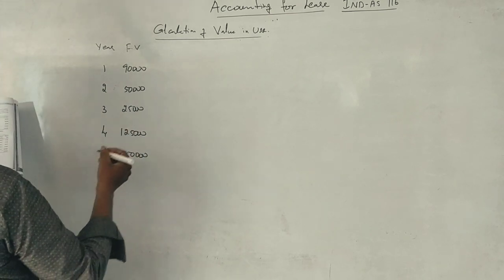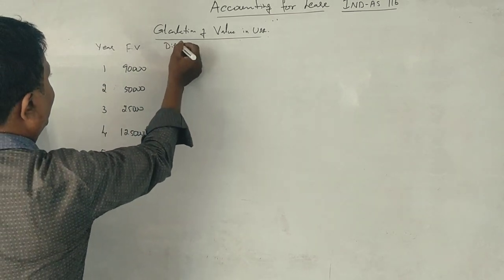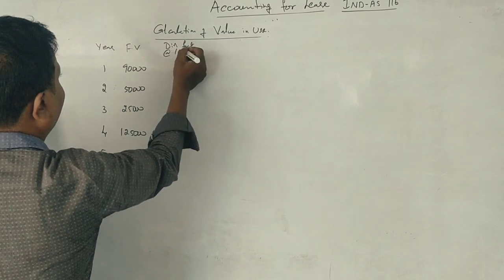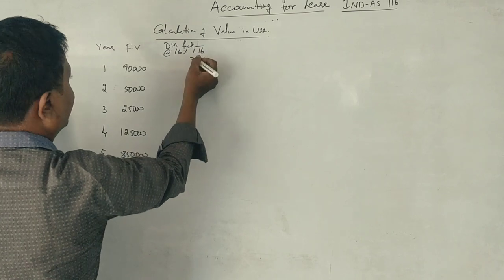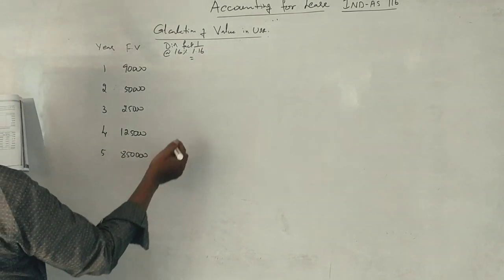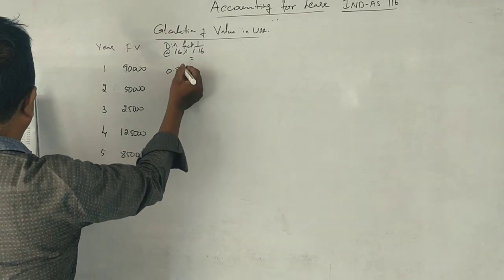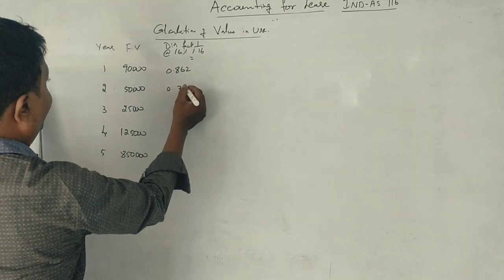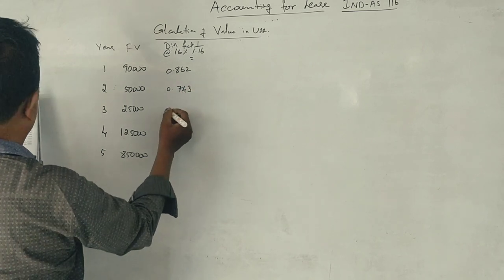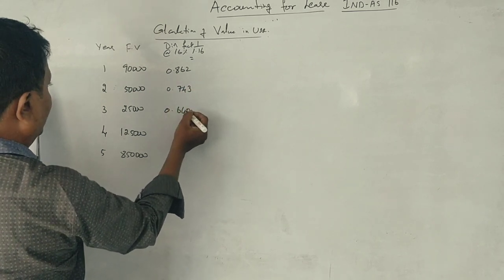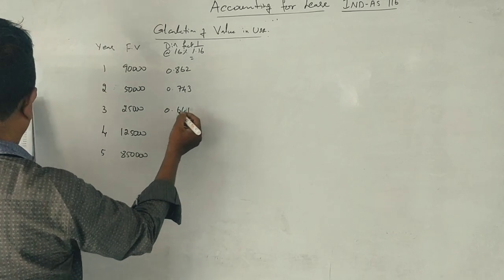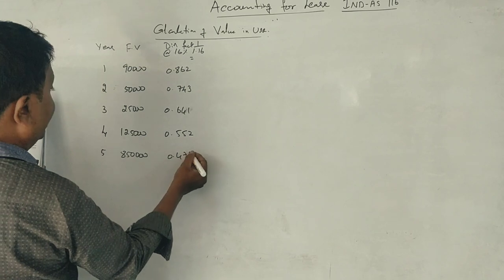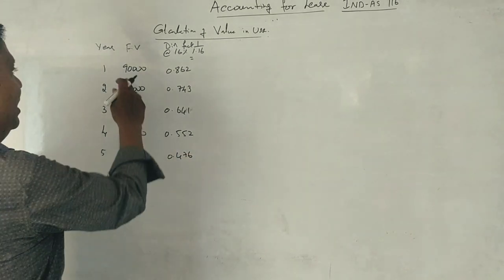We have to apply discount factor at 16%. One divided by 1.16 equals: 0.862, 0.743, 0.640, 0.552, and 0.4641. Now we multiply these factors.